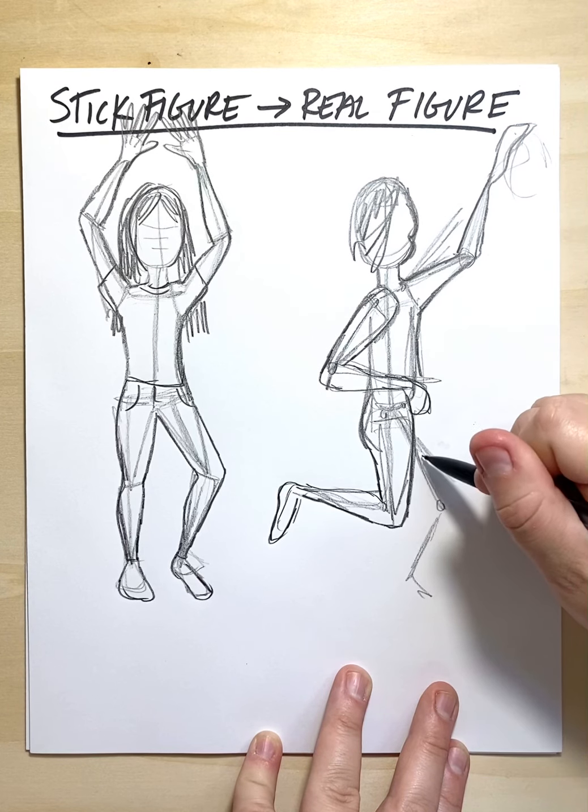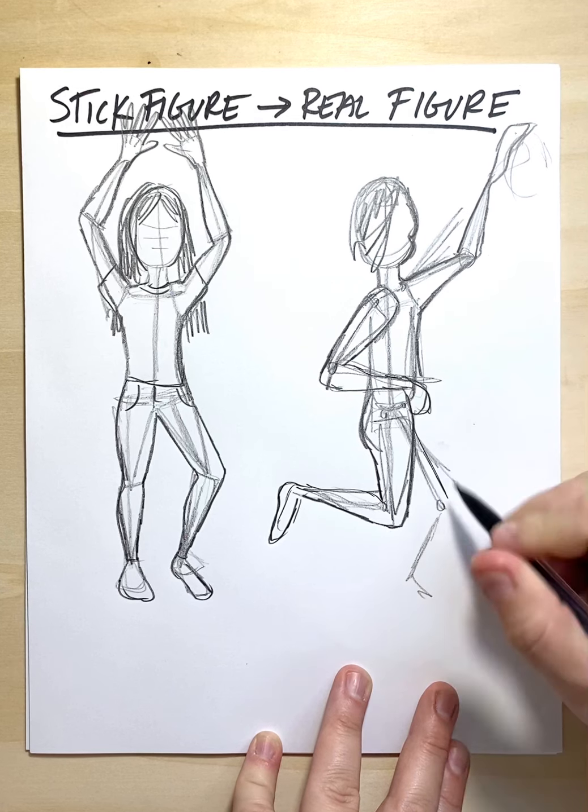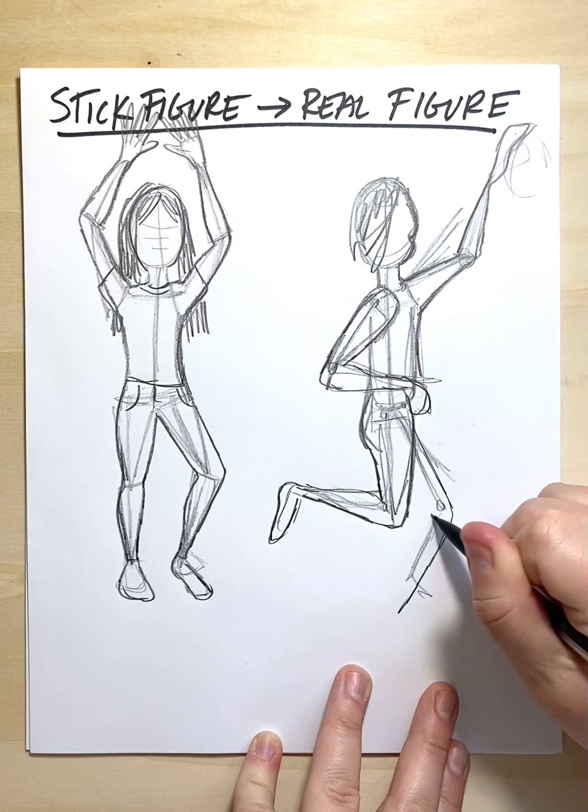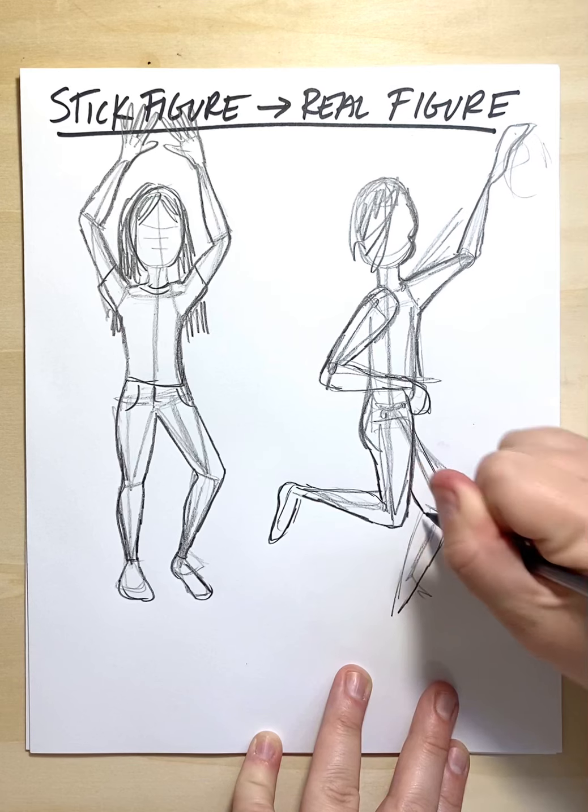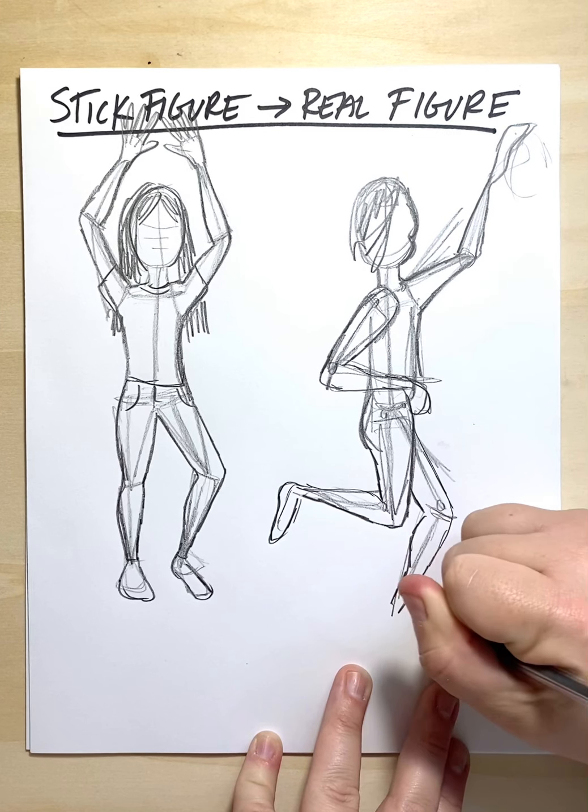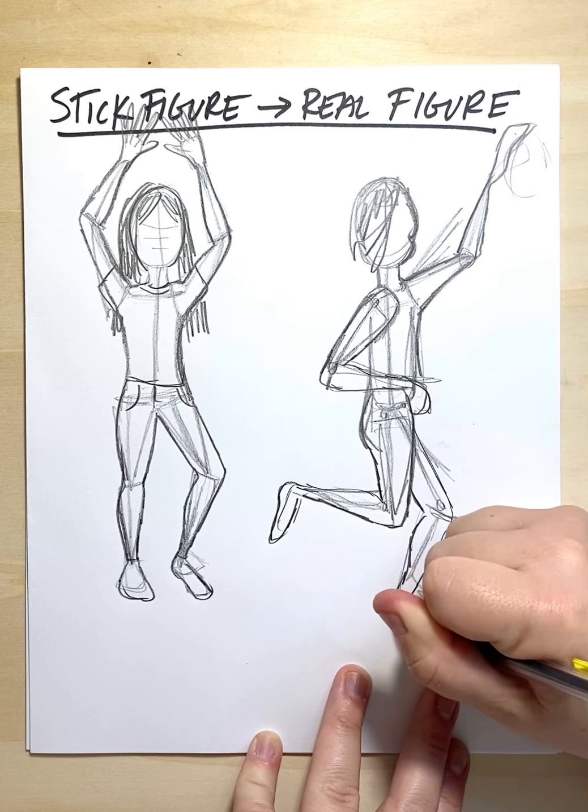actually gonna see all of it. So we'll have a little bit of that thigh to the knee, the leg coming down, so we can add in this calf muscle, thigh to calf, and then we can actually draw the foot.